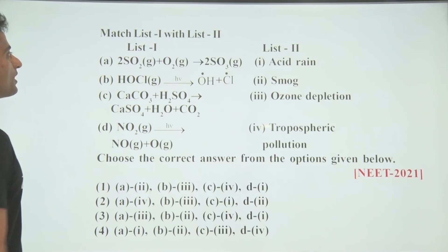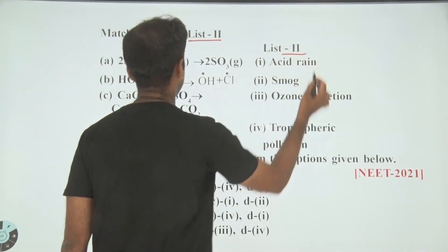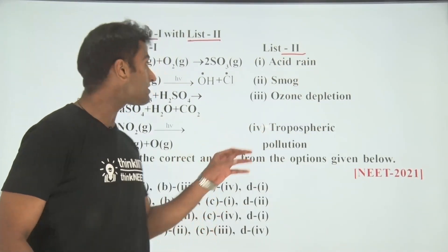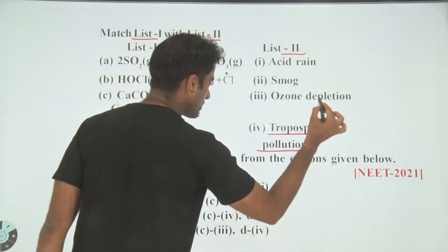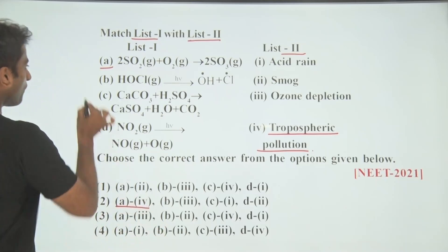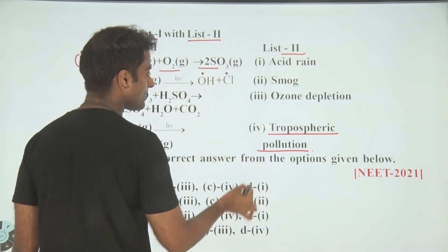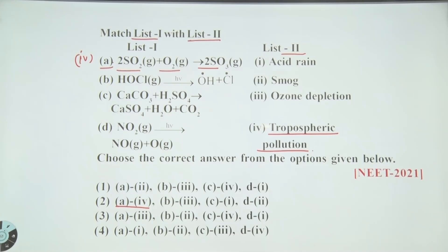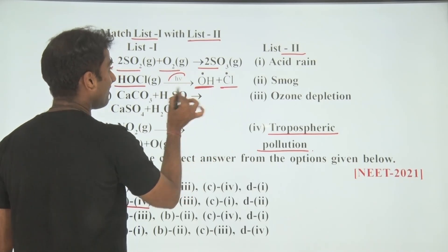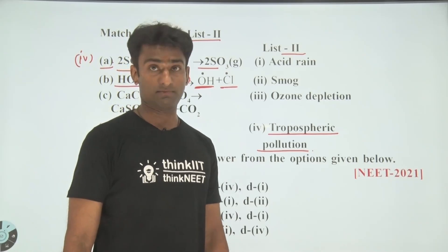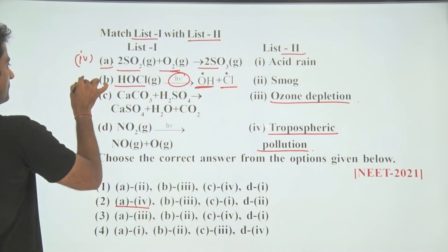This question asks us to match list 1 with list 2. In the first list we have some directions, and in the second some processes are given. First, sulfur dioxide is oxidized into sulfur trioxide — this is the reaction of photochemical smog, a form of pollution. So option A matches with the fourth option. Next, HOCl (hypochlorous acid) gives free radicals in sunlight, which happens in ozone depletion. So B matches with the third.